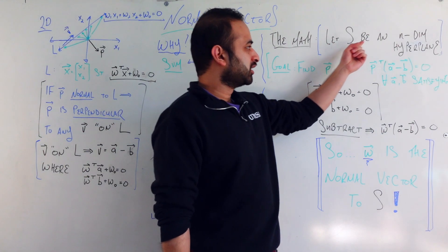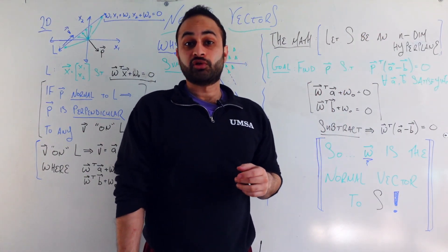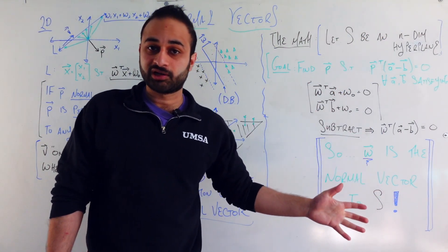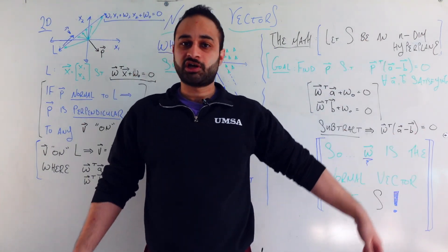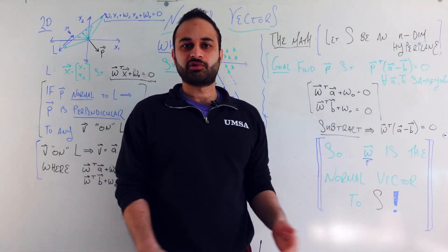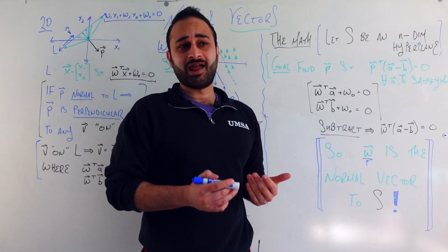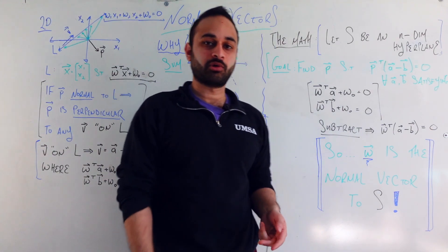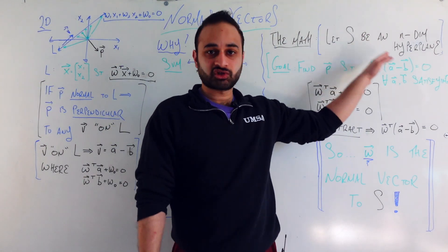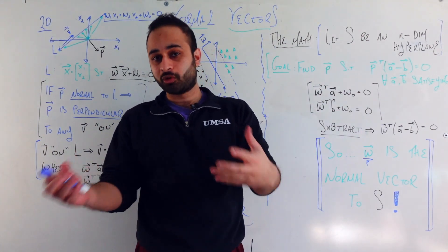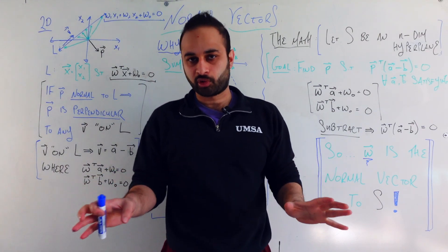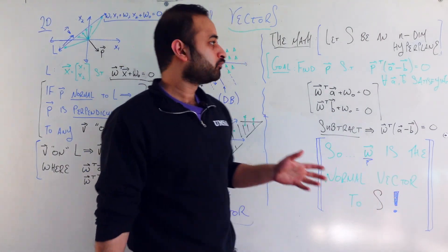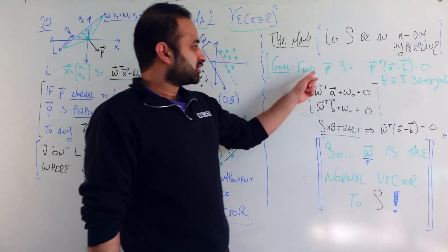So again, let's let S be some n-dimensional hyperplane. So if n is equal to 1, we're just talking about a line. If n is equal to 2, we're talking about a plane, whatever, so on. So it's just some hyperplane that lives in n plus 1 dimensions. So a line is one dimensional, but it lives in two dimensions. So if S is a n-dimensional hyperplane, then it lives in n plus 1 dimensions. That's not too important to this, just wanted to throw that out there.